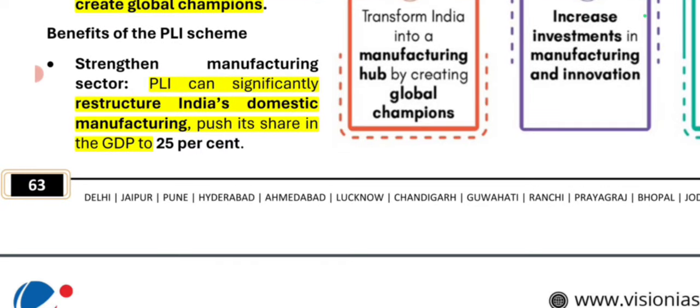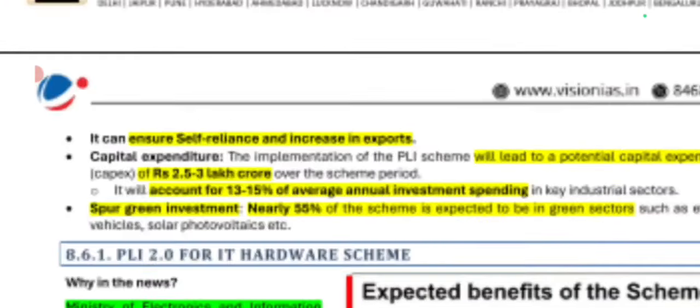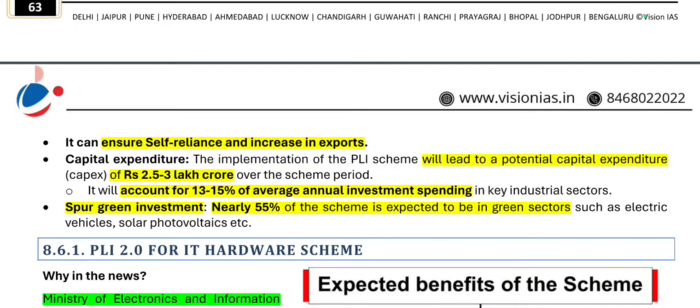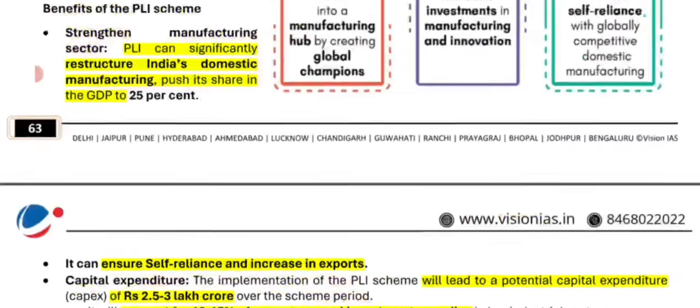What are the benefits of PLI? The manufacturing sector will benefit, restructuring domestic manufacturing to contribute 25% of GDP. Self-reliance and exports will increase. Potential capital expenditure is expected to be Rs. 2.5 to 3 lakh crore, accounting for 13 to 15% of average annual investment spending. Nearly 55% of the scheme targets green sectors, which will boost India's green economy.